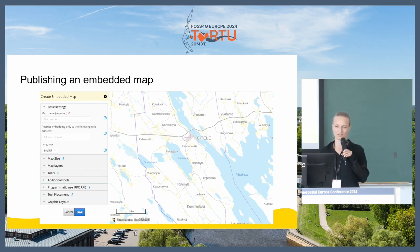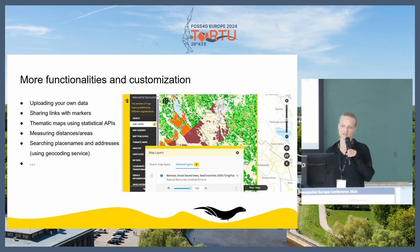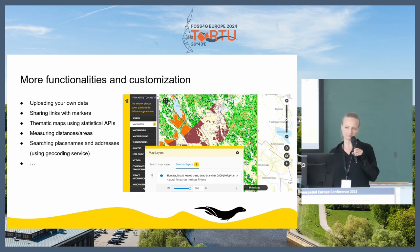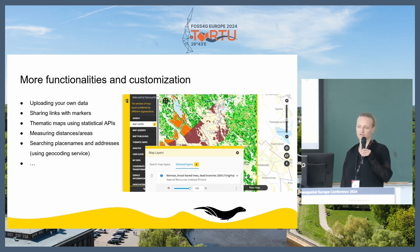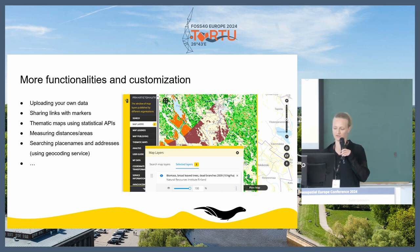Not going into detail today on all of this, but try it yourself if you want. There are quite a few other functionalities, such as uploading your own data — shapefiles or GeoPackage — sharing links with markers, thematic statistical maps, measuring distances and areas, and searching place names and addresses. On the right in the image, you can see a swipe tool, where you can compare two overlaying map layers to each other.